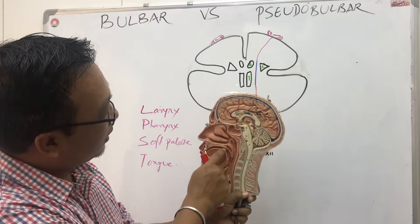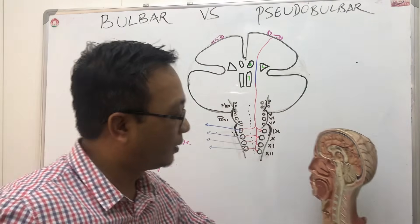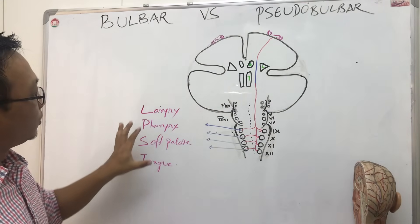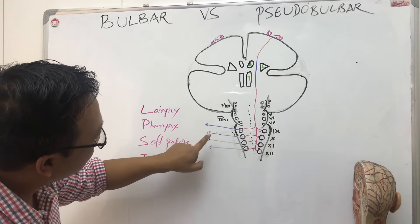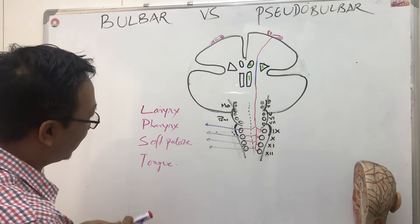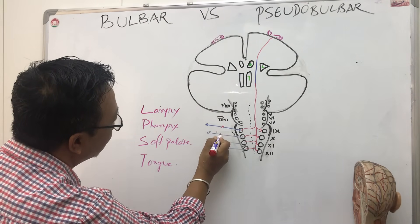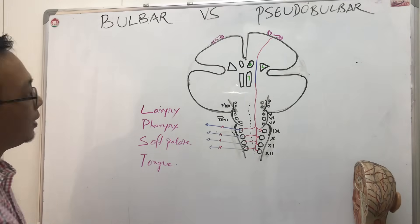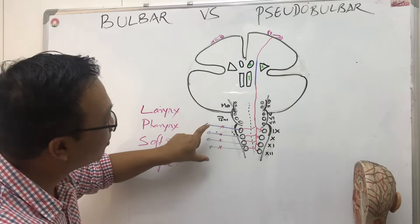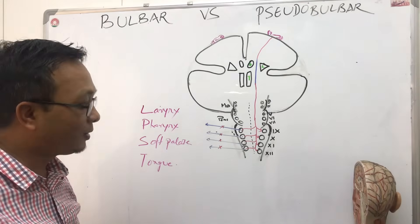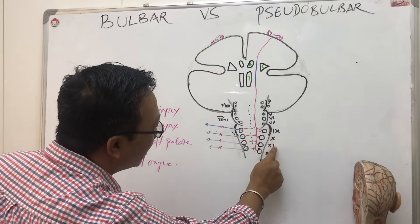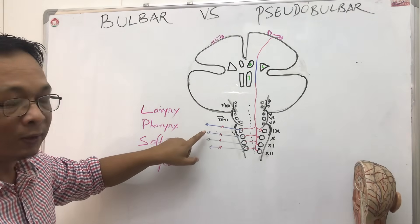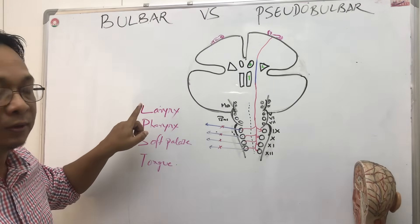When there is a problem in cranial nerves nine, ten, eleven, twelve — when they are disconnected — we can say there is lower motor neuron paralysis. Bulbar palsy is a lower motor neuron palsy, a lower motor neuron paralysis of nine, ten, eleven, twelve. This is a lower motor neuron disease.